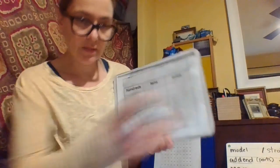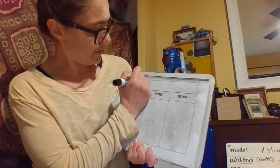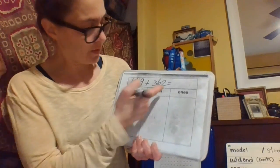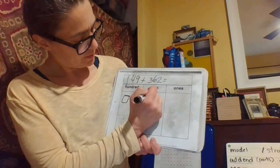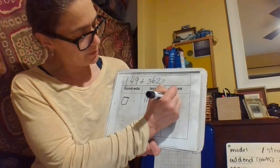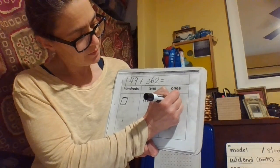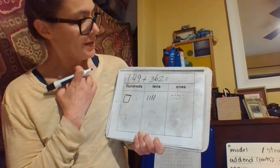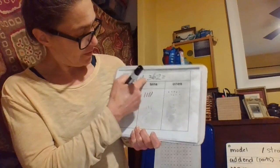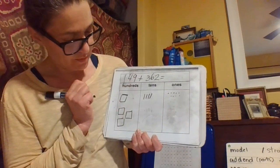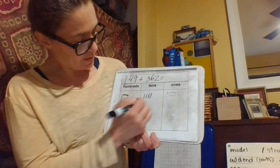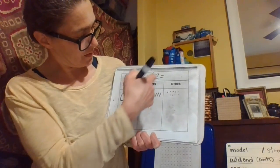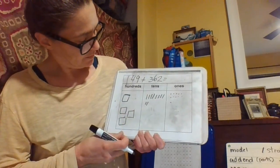The next one is 149 plus 362. We're going to draw the models. We have 100, 10, 20, 30, 40, and then 9. It's like my 10 frame. Then we're going to add the next addend to get the sum. We have 300. 1, 2, 3. Then we have 60. 10, 20, 30, 40, 50, 60. And then we have 2. 1, 2.